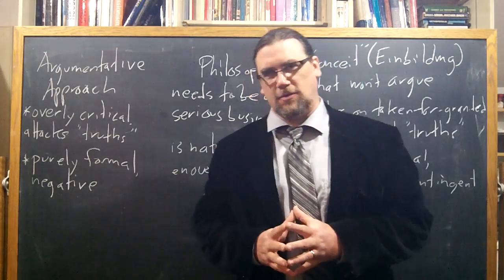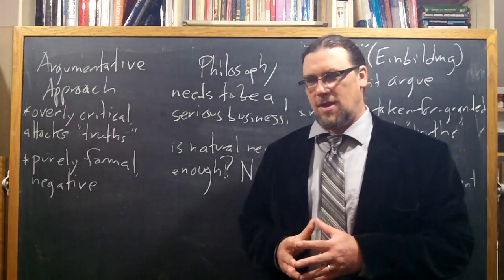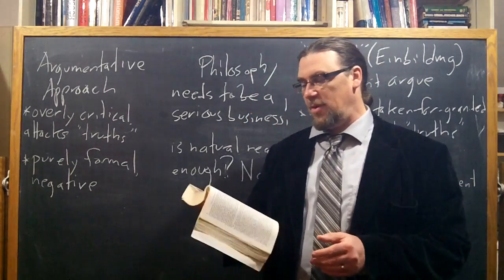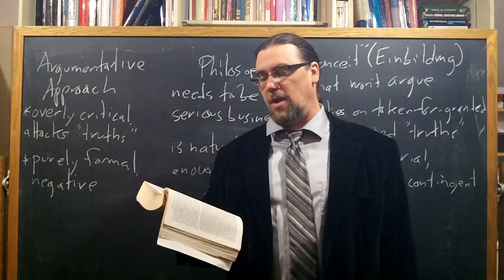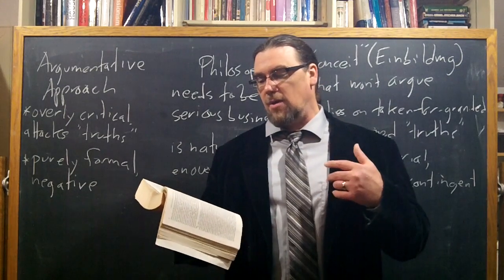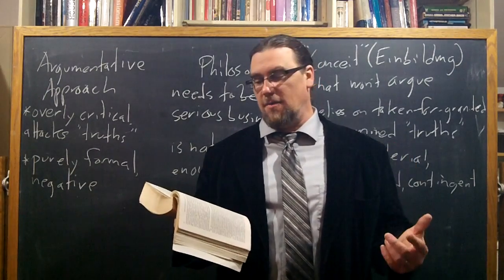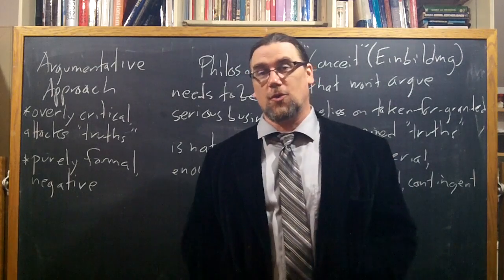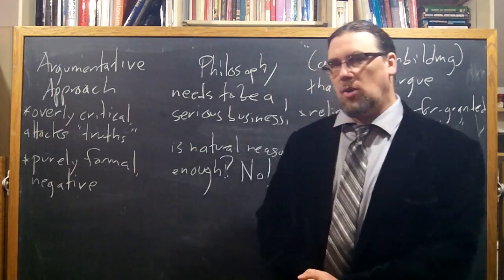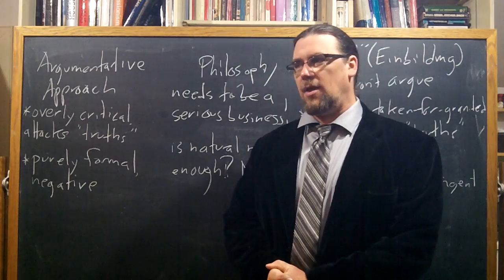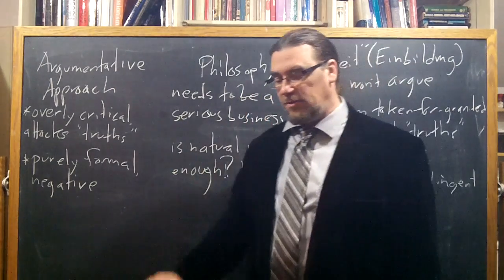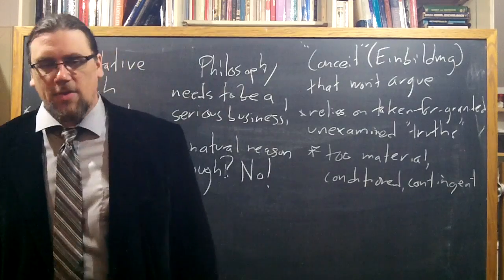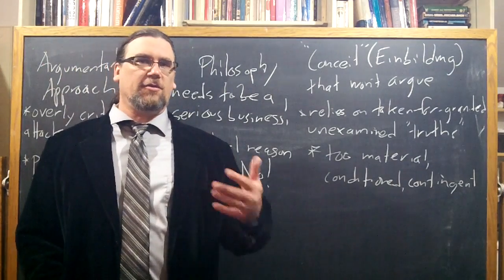Section 67 is this great passage that ends with this statement that let the other sciences try to argue as much as they like without philosophy. Without it, they can have in them neither life, spirit, nor truth. That's a bold statement on Hegel's part. And you might say, what does that got to do with all the things that I've sketched up here?